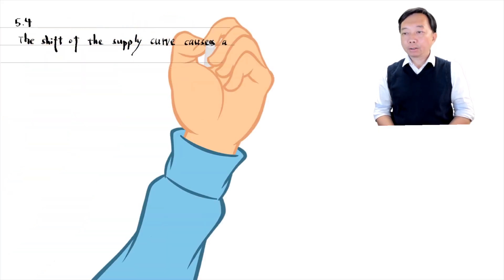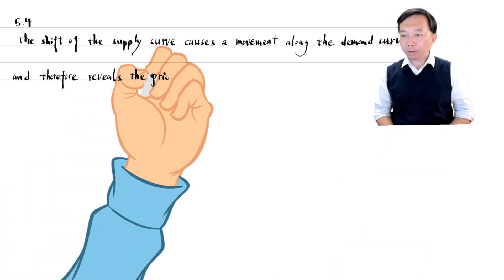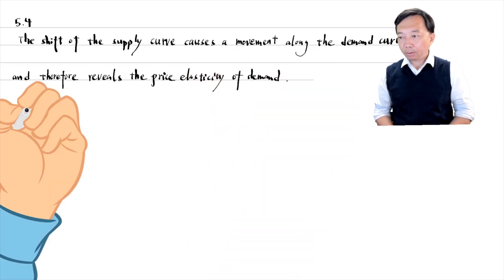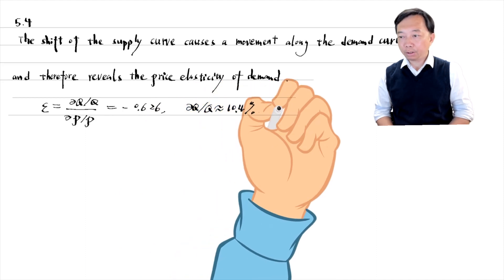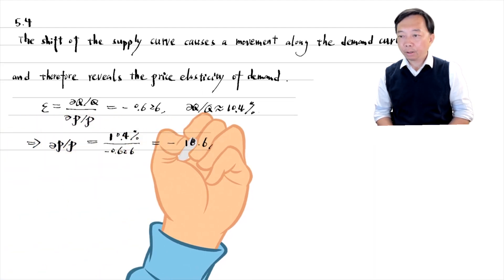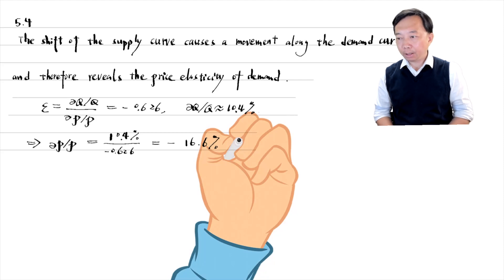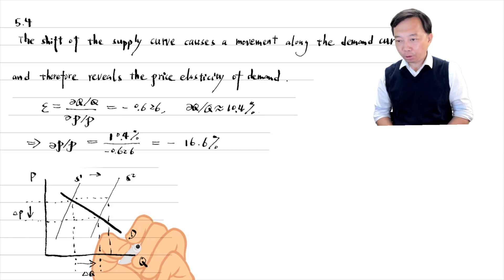The shift of the supply curve causes a movement along the demand curve. Therefore, it reveals the price elasticity of demand. We have the value of the elasticity and the approximate percentage change in quantity demanded. Substituting the values into the formula, the price change is minus 16.6%. Notice that if both supply and demand curves shifted, the equilibrium price and quantity changes would result from the interaction of both curves.